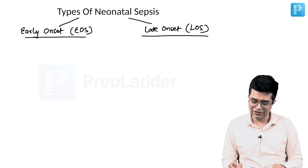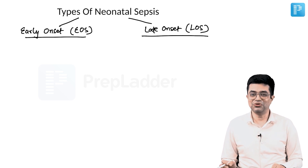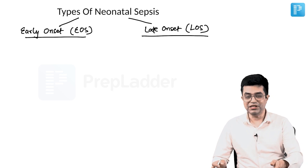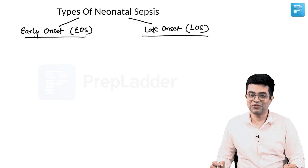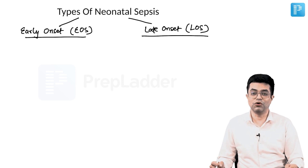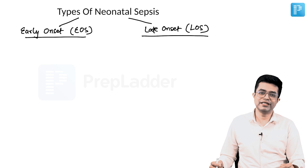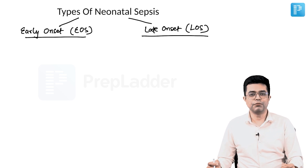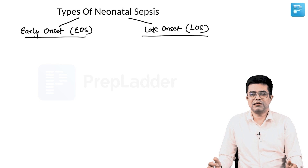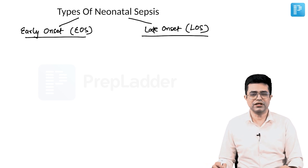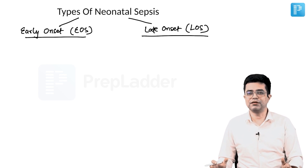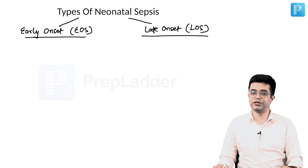Many of you might be thinking you already know this — why repeat it? It's not the rare things which bring us down, it's the known things. In neonatal sepsis, the types, causative organisms, and latest updates — people get these wrong only because they didn't bother to revise, thinking they already know it. This is a summary video and you must go through it before the exam.